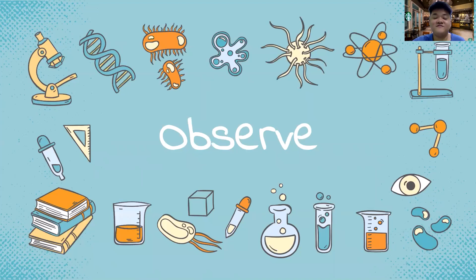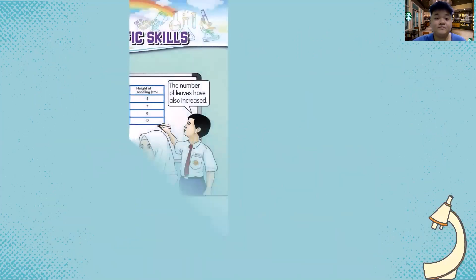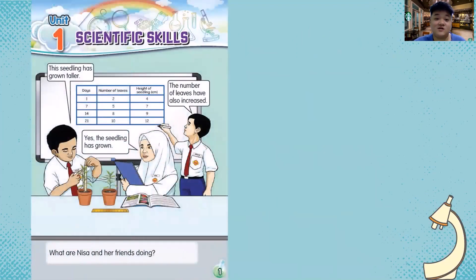The first part of our lesson is observe. What is observe? When we observe something, we are looking at something. We use our eyes or our senses to see what is happening.